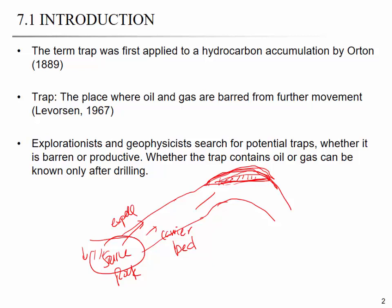To prevent further migration to the upper layer, you need to have a seal or cap rock. So, to have a hydrocarbon accumulation, you need a source rock, a carrier bed, a trap, and also a cap rock or seal.